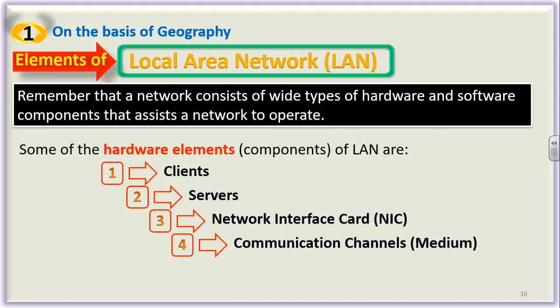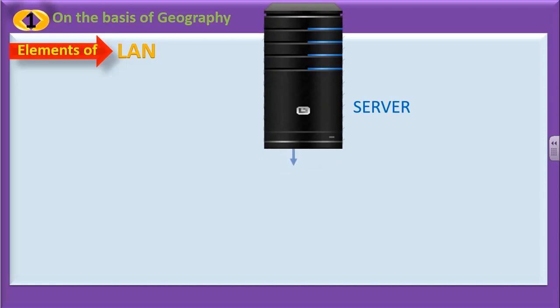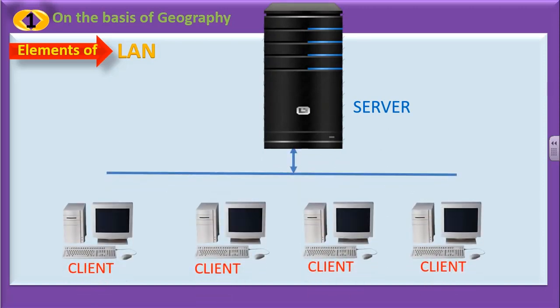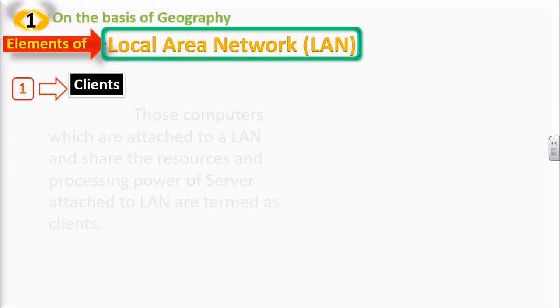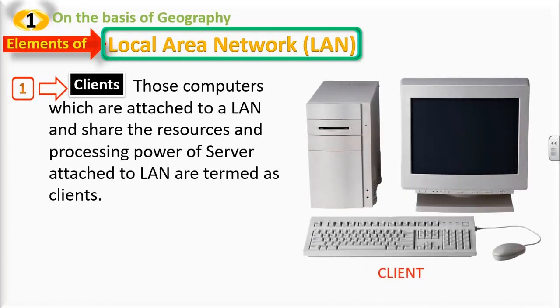The first component is clients. A server provides information to a number of computers — here we have four client computers and one server. The client can make a request to the server to provide some data or information. Those computers which are attached to a LAN and share the resources and processing power of the server are termed as clients.